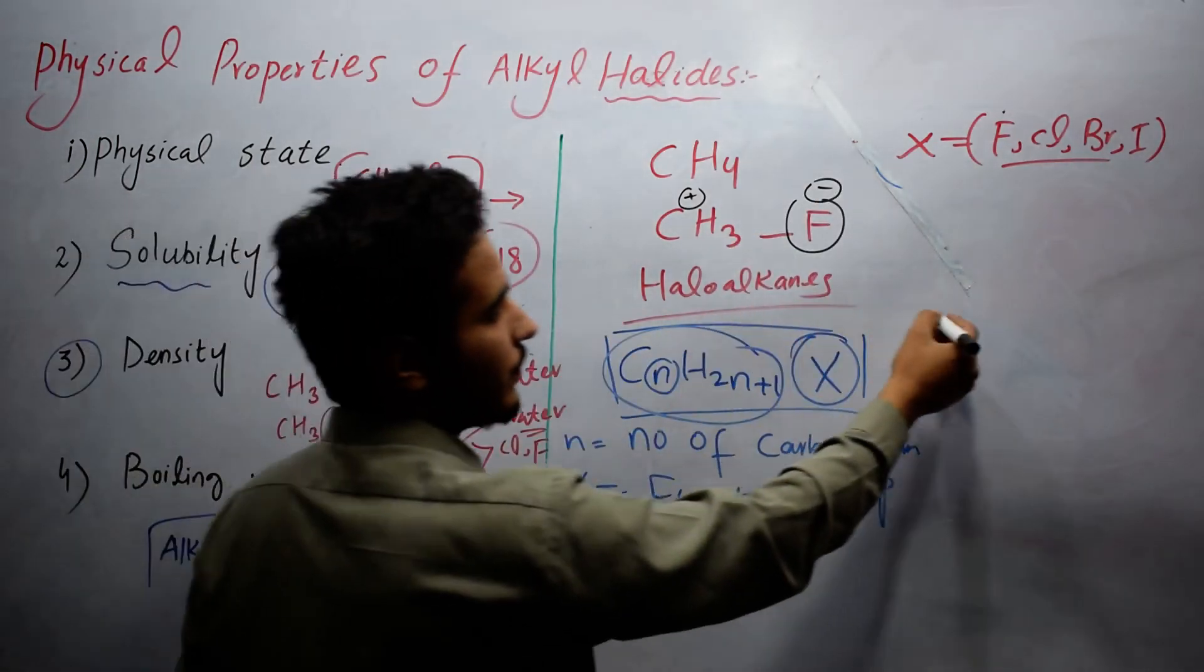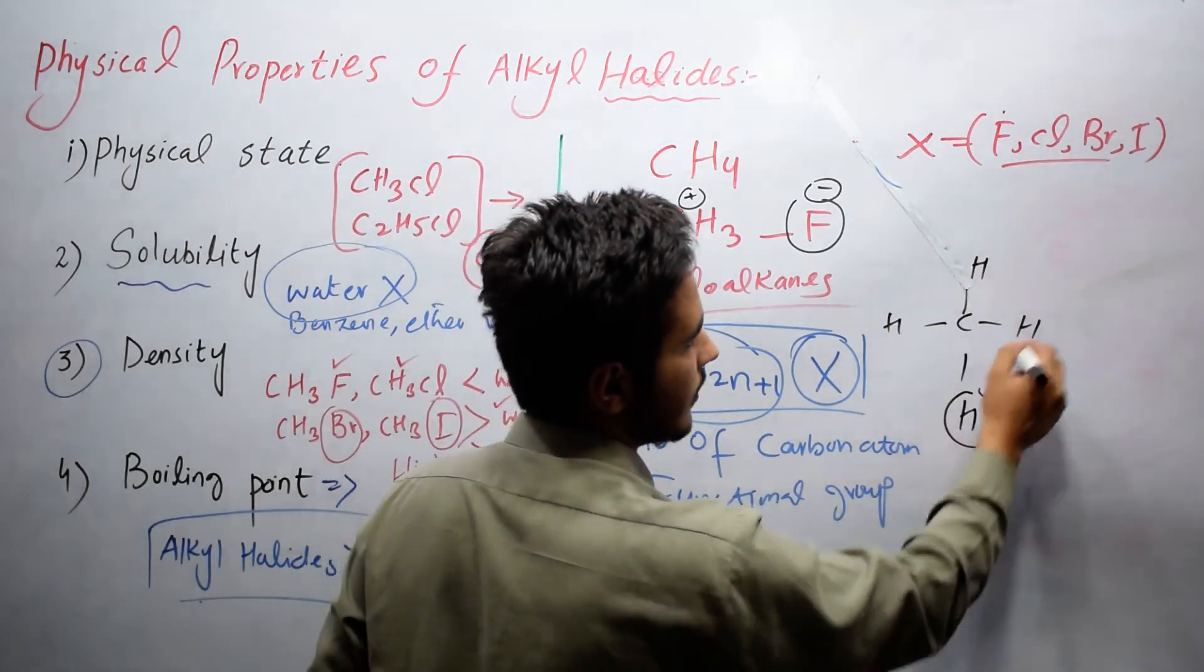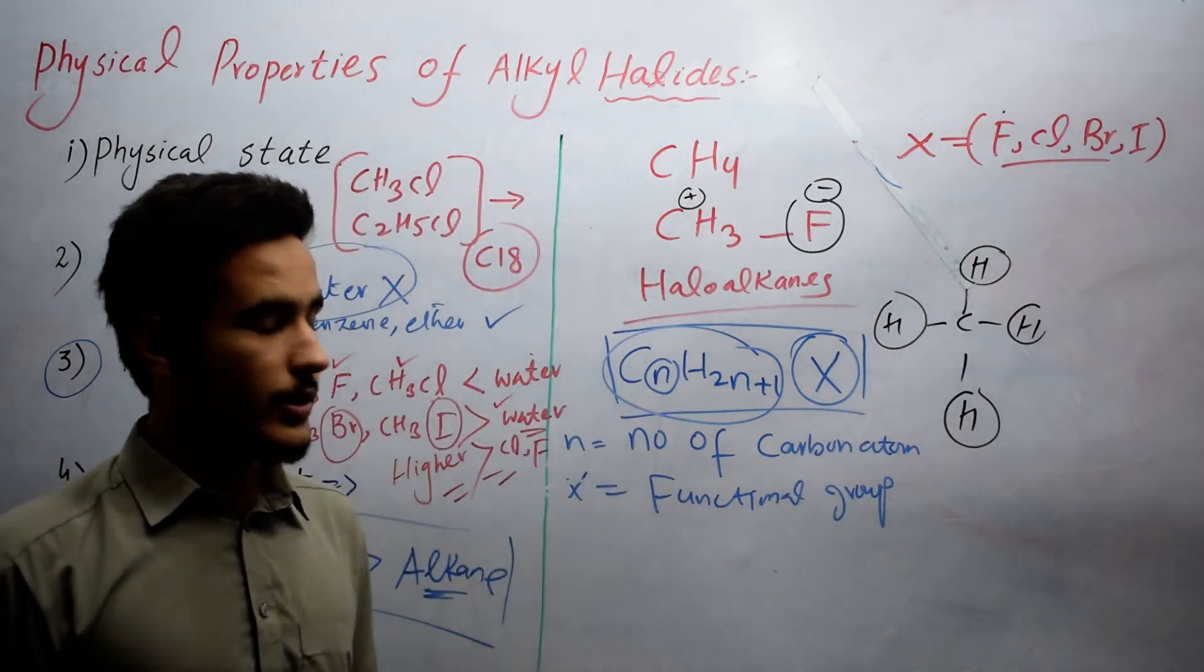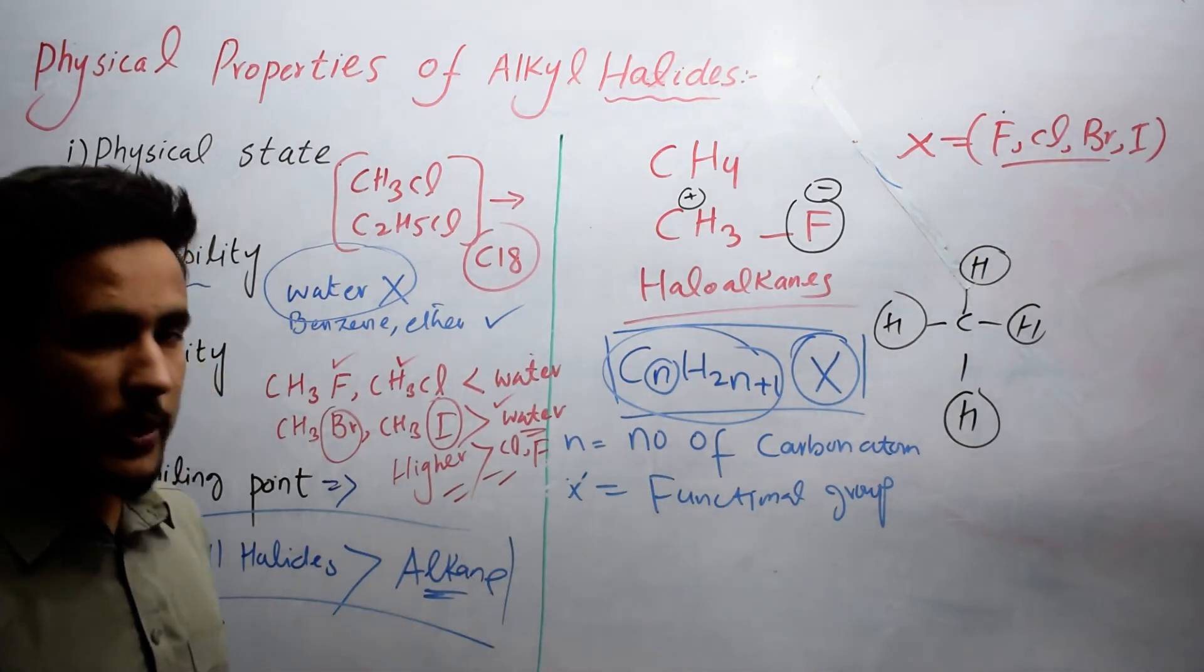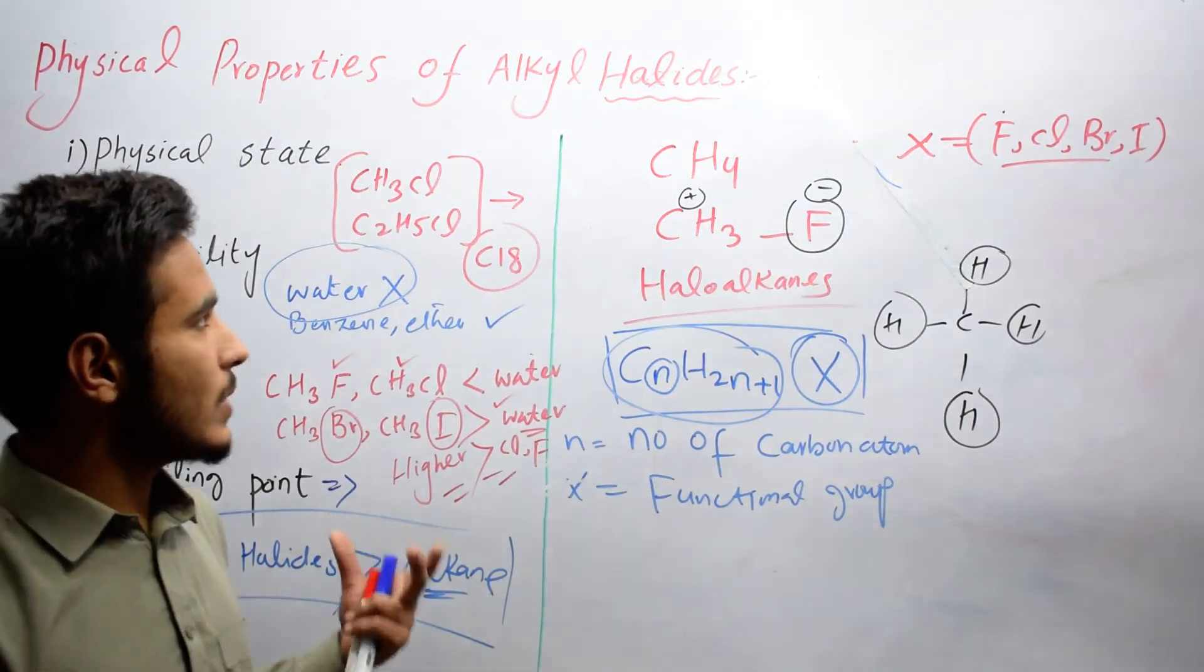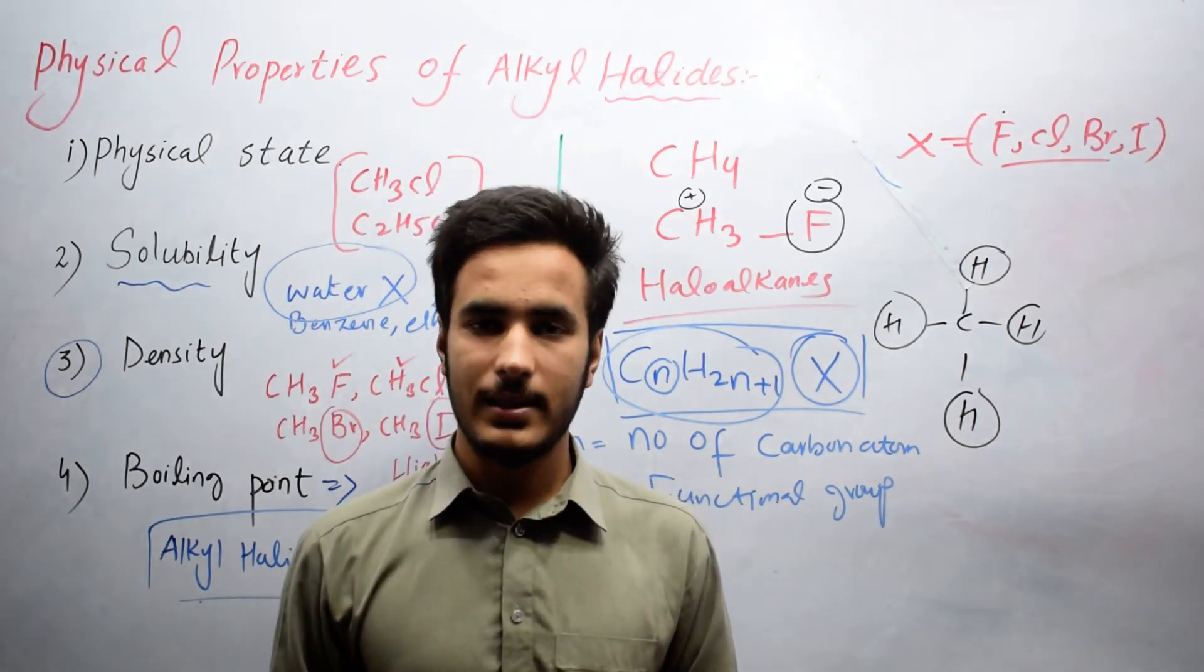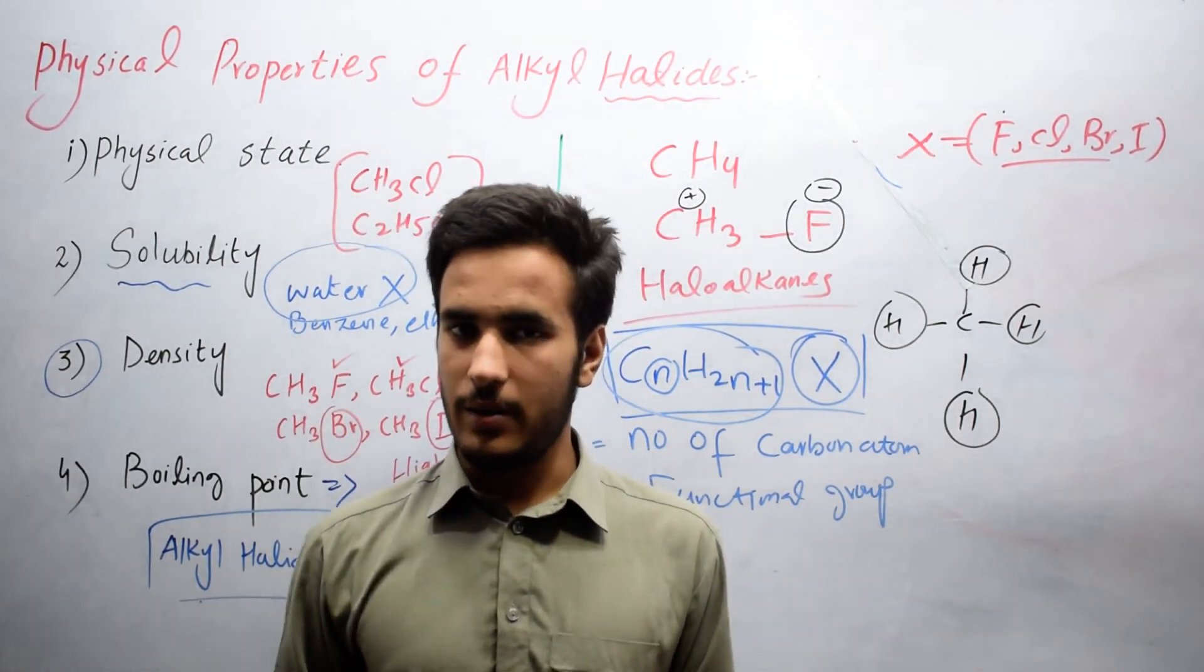While in the case of alkane, there is no polarity. Only hydrogen is attached with carbon. That's why alkyl halides have higher boiling point than alkanes. So this was all about physical properties of alkyl halides. In the next video we will discuss their nomenclature, their reactivity, and so on. Thanks for watching.